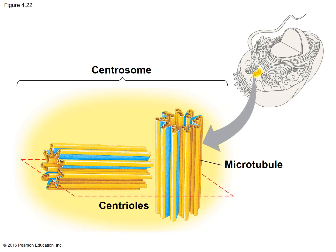Now we're looking at the picture of that centrosome we just discussed. On this slide, going back to that model cell idea — remember, not all cells have all of these parts. These structures are called centrioles. There are two of them, and when you look at the pair they're referred to as the centrosome. They're made out of microtubules in that configuration we saw in the video.